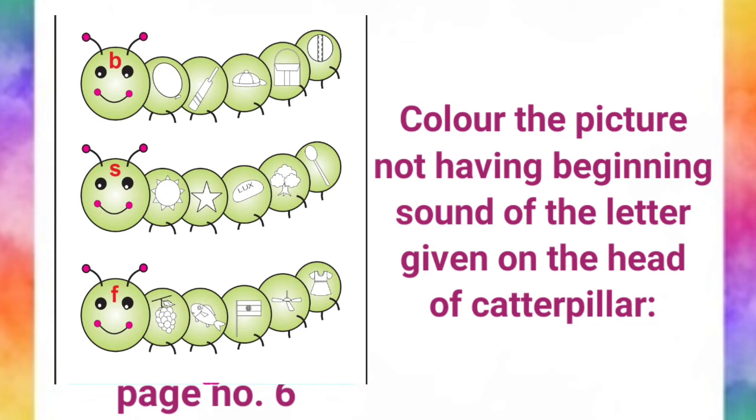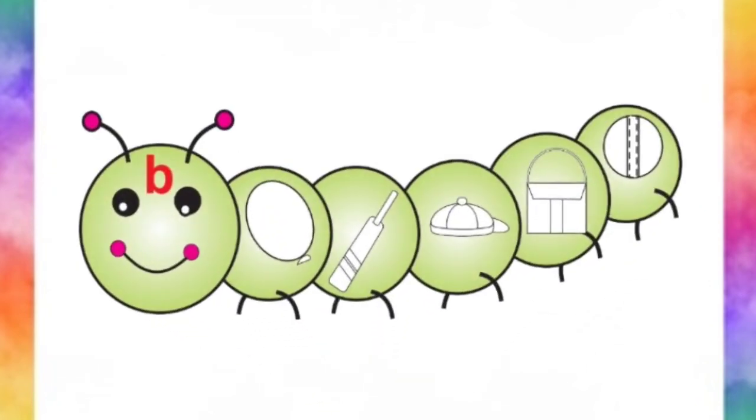Color the picture not having beginning sound of the letter given on the head of caterpillar. Dear children, there are three sets of letters. For the first set, the given letter is B. And there are five pictures.